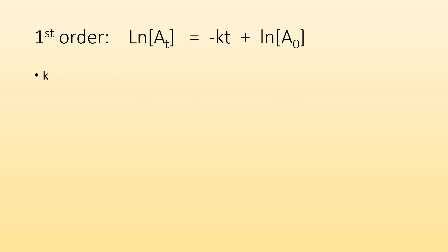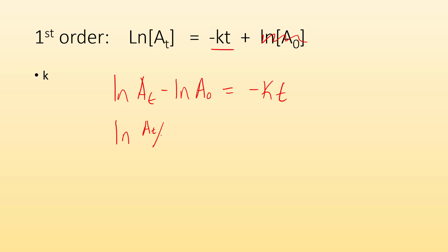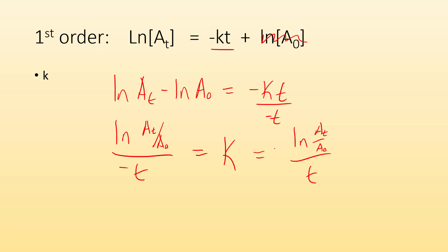What about k? I want to get k by itself. I'm going to have to subtract ln of a zero from both sides. So I get ln of at minus ln of a zero equals negative kt. Since I'm subtracting, it's the same thing as dividing, so I can do ln of (at divided by a zero), which equals negative kt. Now I divide each side by negative t, and that gives me k. So k equals negative ln of (at over a zero) over t.